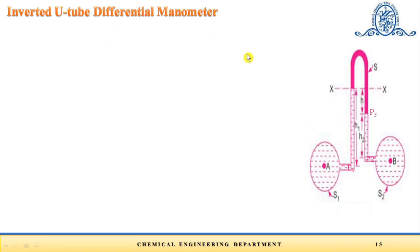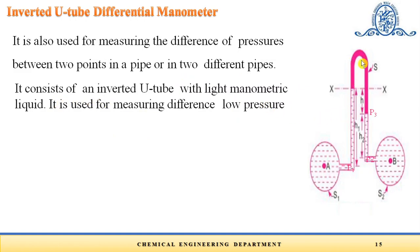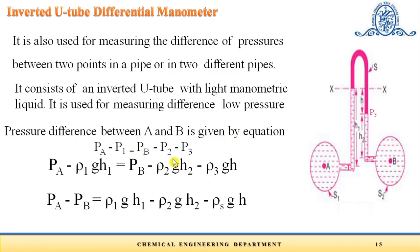The inverted U-tube differential manometer is also used for measuring the difference in pressure between two points in a pipe or two different pipes. It consists of an inverted U-tube with a light manometric liquid, used for measuring low pressure differences. As we move upward, pressure is subtracted rather than added. The governing equation is: P_A − P1 = P_B − P2 − P3. Rearranging: P_A − P_B = ρ1·g·h1 − ρ2·g·h2 − ρs·g·h, allowing us to calculate the pressure difference in the inverted U-tube differential manometer.